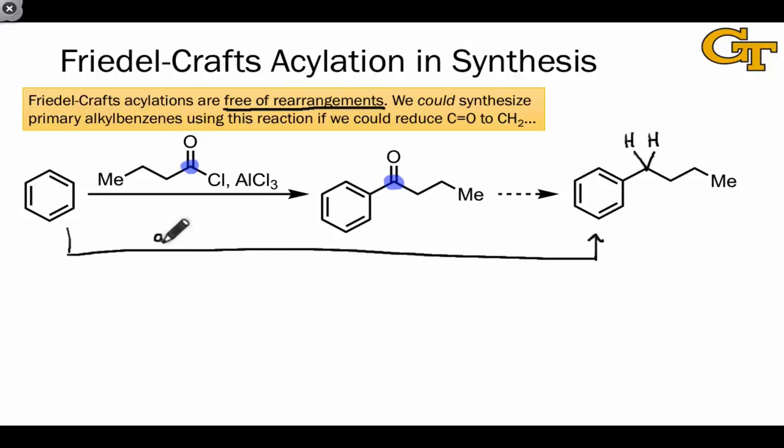If we tried alkylation here, instead of getting the expected linear alkyl chain product, we would end up with a branched product that's the result of rearrangement and bond formation here instead of at the end position.